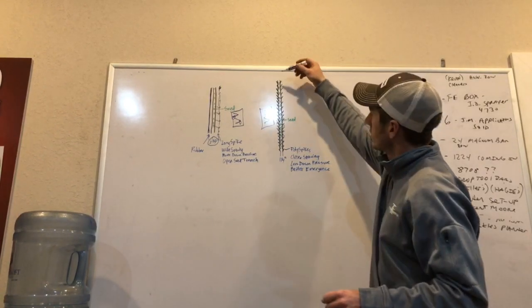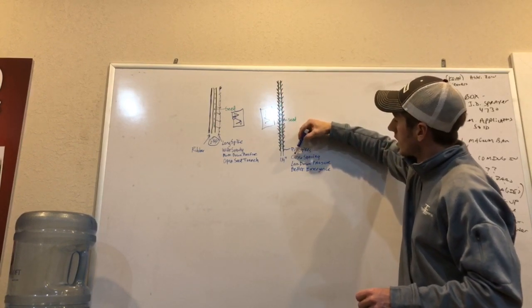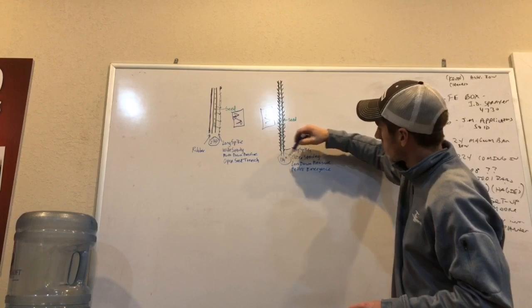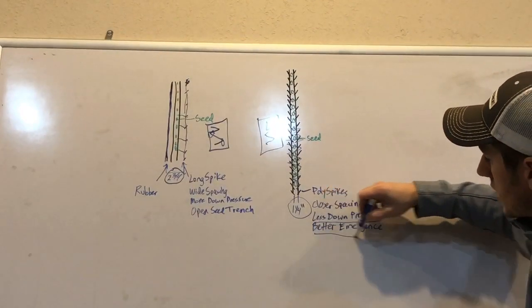So, over here, going back to the poly spikes, we're in the first notch, so we've got a closer spacing at the inch and a quarter, less down pressure on our tailpiece, which equals better emergence.